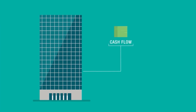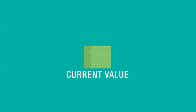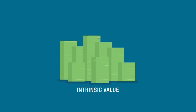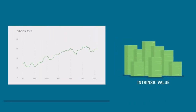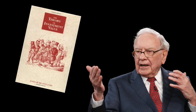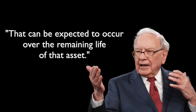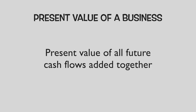Don't get intimidated by this term. All a DCF entails is using the cash flow a company produces to find the fair value for that company. Using a DCF will help you identify what is referred to as a company's intrinsic value — simply the fair value of a business, or what the business is actually worth. A quote Warren Buffett frequently uses: the intrinsic value of any stock, bond, or business today is determined by the cash inflows and outflows, discounted at an appropriate interest rate, that can be expected to occur over the remaining life of that asset. Put simply, the present value of a business is the present value of all future cash flows added together.